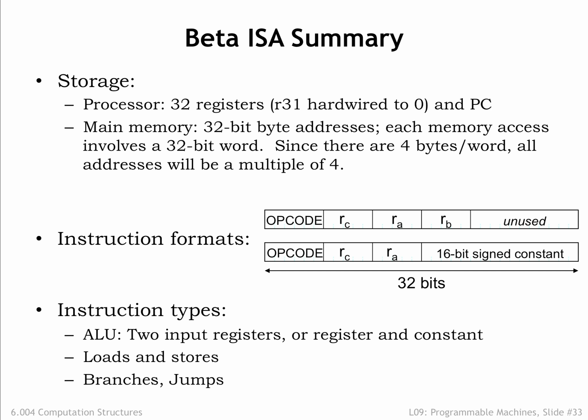There are two instruction formats. The first specifies an opcode, two source registers, and a destination register. The second replaces the second source register with a 32-bit constant, derived by sign extending a 16-bit constant stored in the instruction itself. There are three classes of instructions: ALU operations, load and store for accessing main memory, and branches and jumps that change the order of execution.